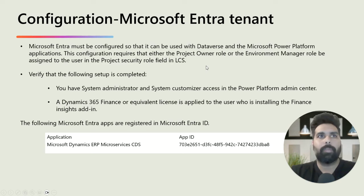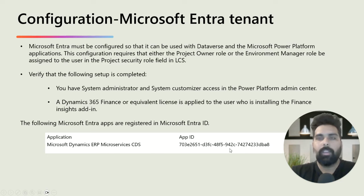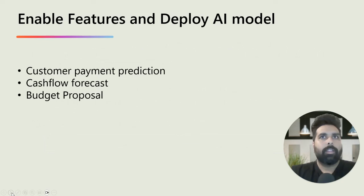For Microsoft Entra tenant configuration, you need it configured with your data warehouse and Power Platform applications. You need two roles defined: system admin and system customizer access. You also need a particular application with the app ID given on the learning portal — I'm going to share that portal link so you can validate all the information and steps there.